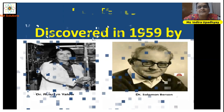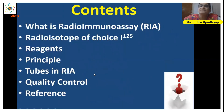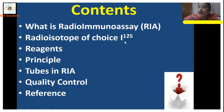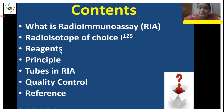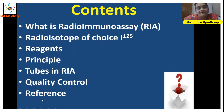The contents of this presentation will be: what is radioimmunassay, what is the radioisotope of choice — iodine-125 — and why is it so, the reagents, the principle, tubes in RIA, quality control, and the references used.